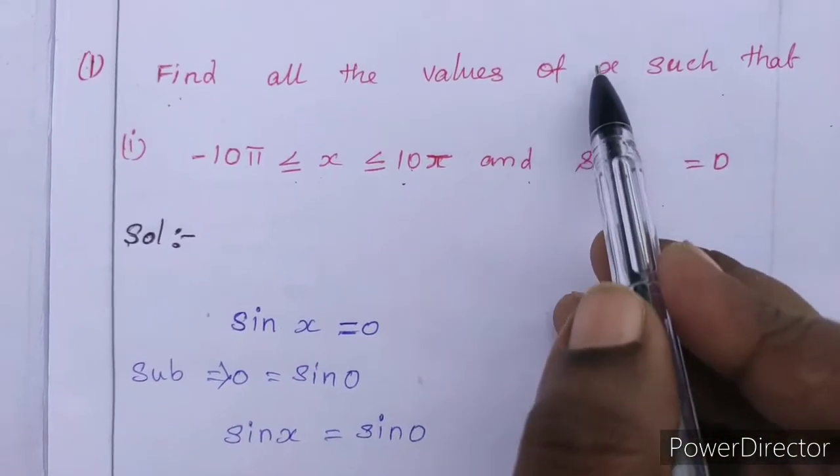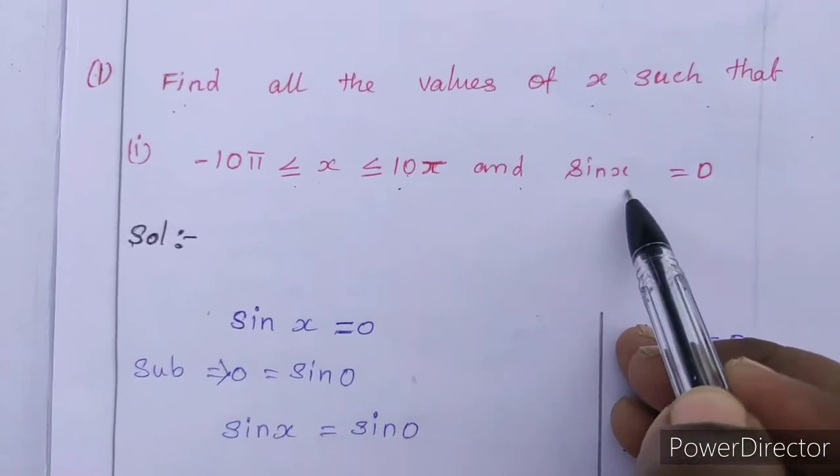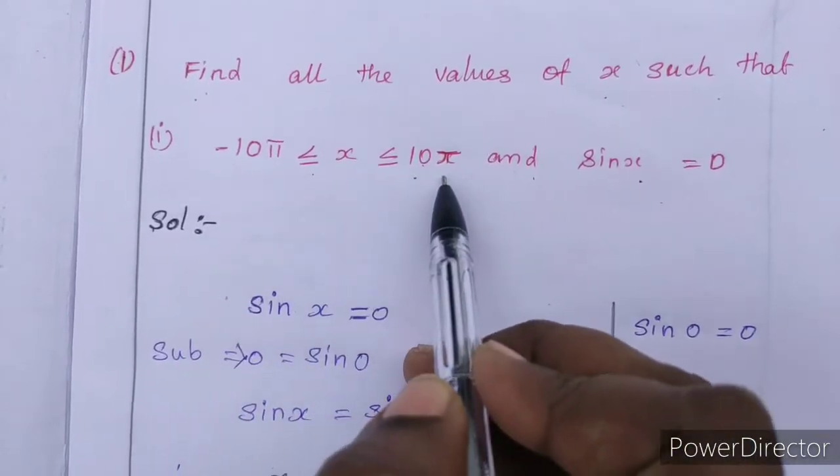Looking at the question, if you look at all values, the given condition is sin x = 0 and x will always lie between -10π to +10π.